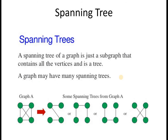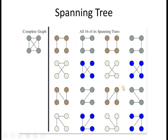First of all, let's see what a spanning tree is. A spanning tree of a graph is just a subgraph that contains all the vertices and is a tree. A graph may have many spanning trees. For example, this given graph has 4 possible spanning trees. In a spanning tree, you must consider all vertices, and the number of edges should be one less than the number of vertices. There are different combinations of edges possible, giving different spanning trees. For a complete graph, there are all 16 of its spanning trees shown.